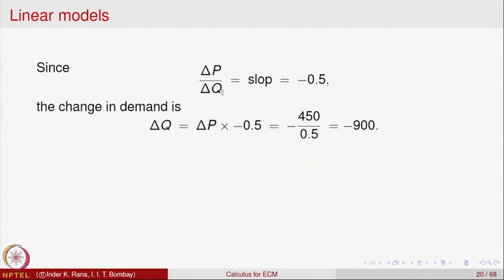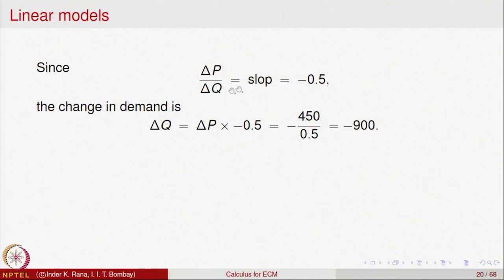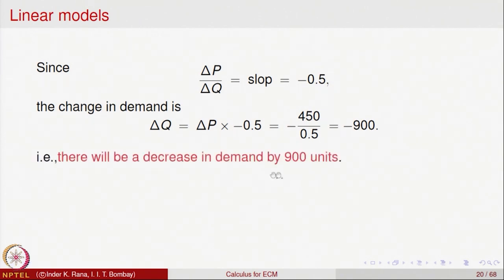There is a correction: we should be computing delta Q as delta P divided by minus 0.5. With delta P equal to 450, delta Q comes out to be minus 900. This means when the music player is selling for 9000 rupees, a 5 percent price increase will cause a decrease in demand by 900 units.